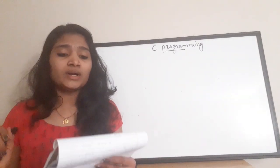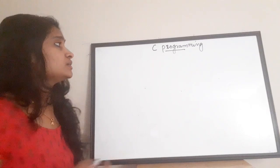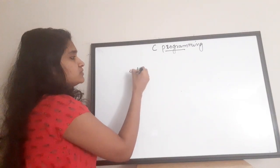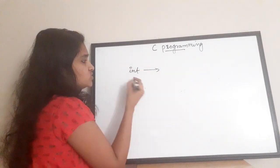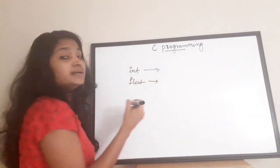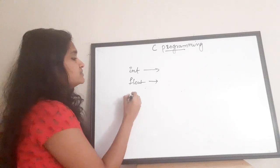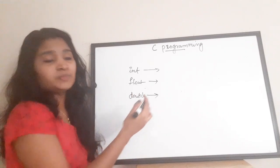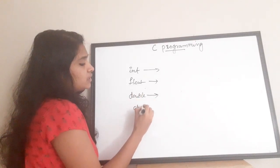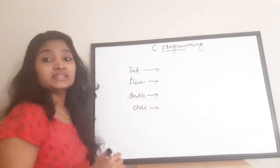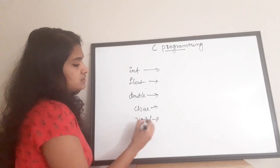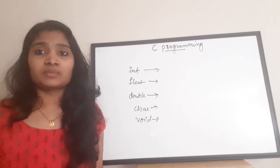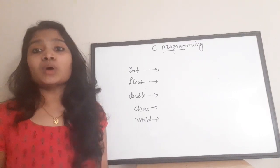The next question is: what are the basic data types used in C programming? C consists of various data types: 'int' for integers, 'float' for decimal or floating-point numbers, 'double' for decimal numbers with double precision, 'char' for characters, and 'void'. These are the fundamental basic data types used in C programming.